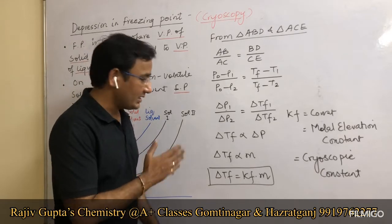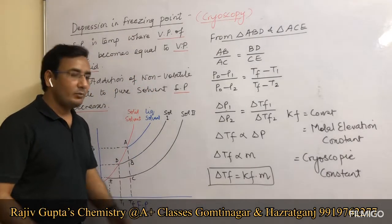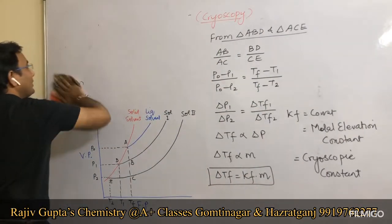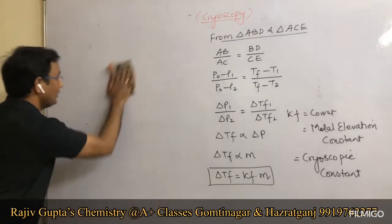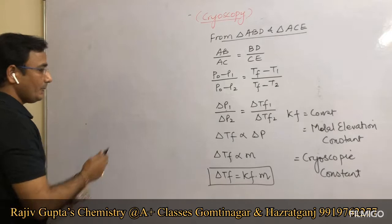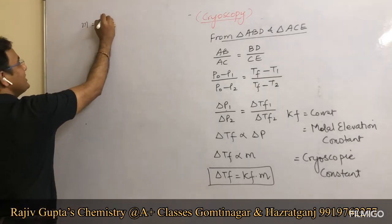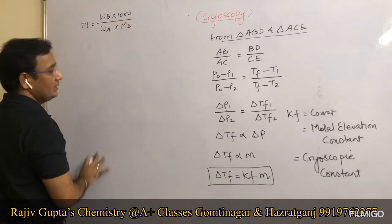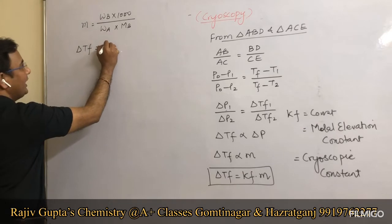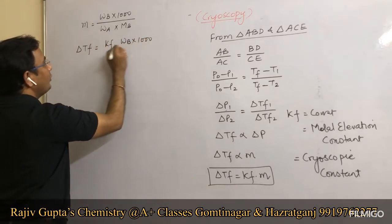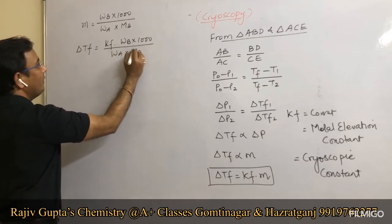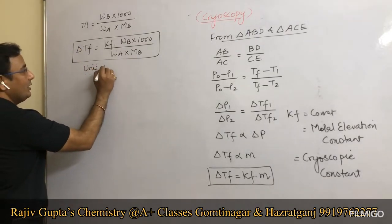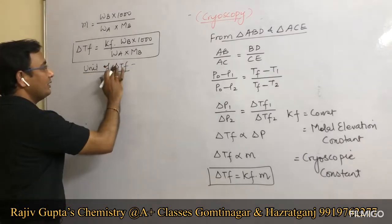Just as we derived the expanded formula for ΔTb, we can derive the formula for depression in freezing point. Since molality = Wb × 1000 / (Wa × Mb), we get ΔTf = Kf × Wb × 1000 / (Wa × Mb). This is the formula for depression in freezing point.